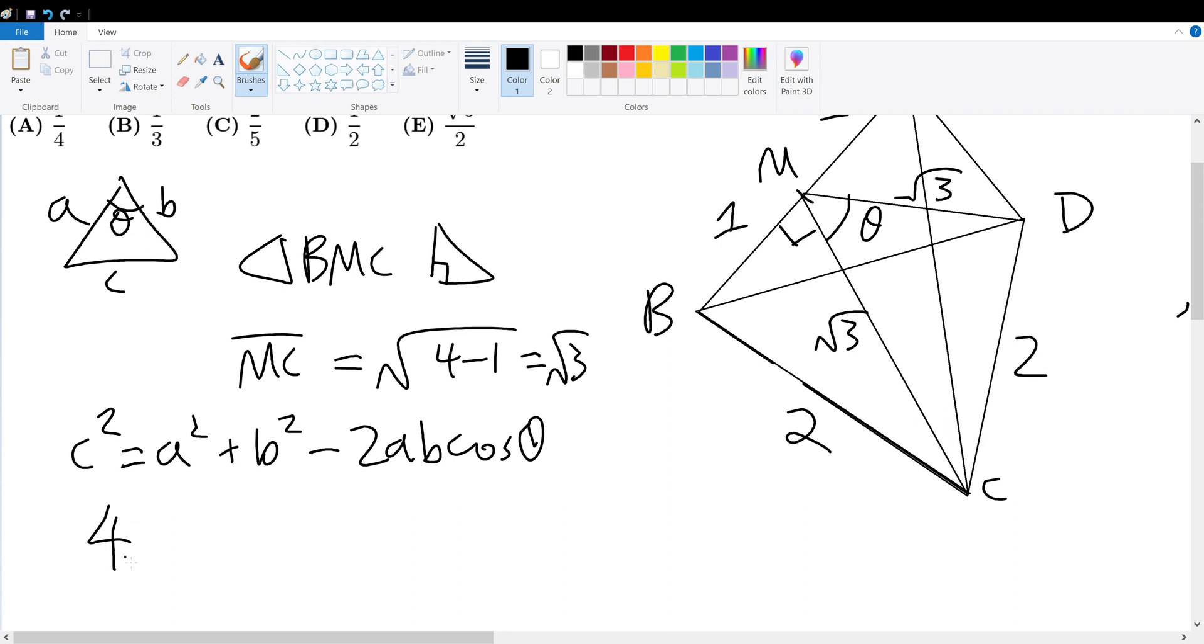Remember, every side length is the same. So 4 is equal to a squared, which is 3, plus b squared, which is 3, minus 2 times ab. Well, a and b in this case are both root 3. So that's 6 cosine theta.